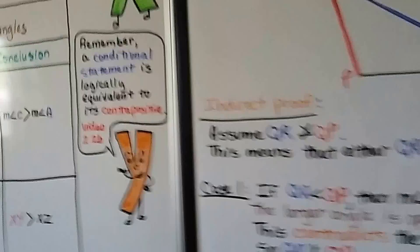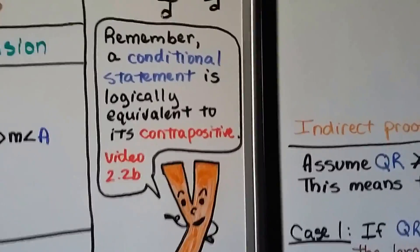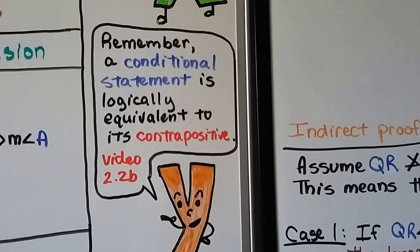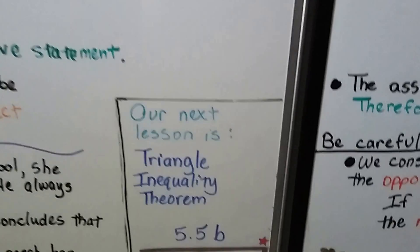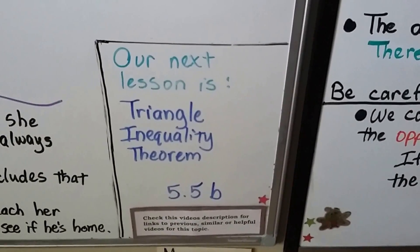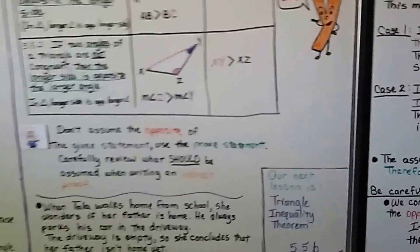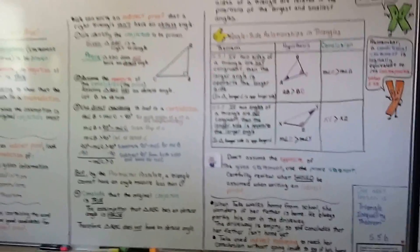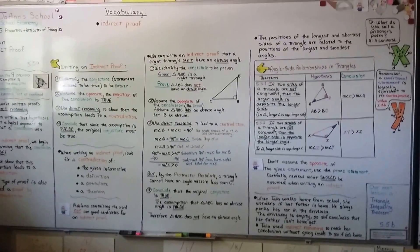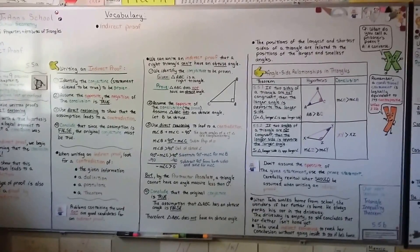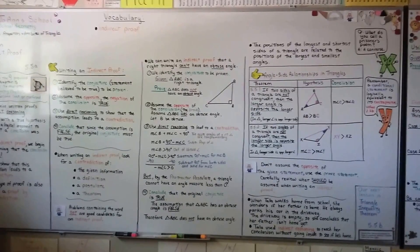Remember, a conditional statement is logically equivalent to its contrapositive. If that confuses you, go back to Chapter 2 and watch lesson 2.2b. Our next lesson is the Triangle Inequality Theorem, lesson 5.5b, where we'll talk about the sides of triangles and how some segments will not form a triangle and some will. I know this was a lot of information — I hope you took good notes, keep your chin up, I believe in you, and I'll see you next time.